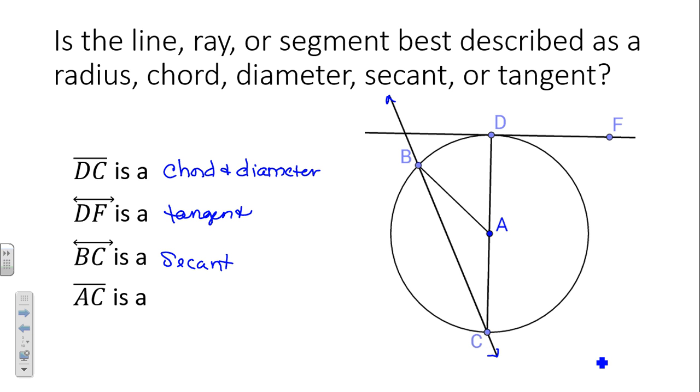And then segment AC is what Jenny? Segment AC starts at the center and goes to a point on the circle so it's a radius. It's a radius. Everyone has those? We understand these? We'll take a little mini quiz tomorrow over these terms to make sure we know them. They're not hard. If you just read through the notes.